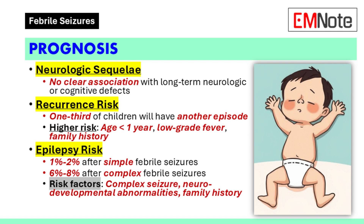The risk of future epilepsy after simple febrile seizures is 1% to 2%, compared to approximately 0.5% in children without febrile seizures. Children with complex febrile seizures have a higher risk of 6% to 8%. Risk factors for epilepsy after a febrile seizure include complex febrile seizure, seizure within one hour of fever onset, age older than 3 years at the first seizure, pre-existing neurodevelopmental abnormality, and a family history of epilepsy.